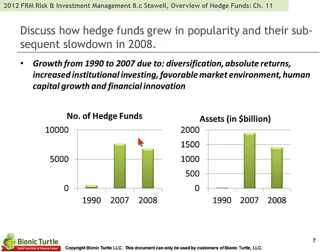Stahl makes the point that the growth of the hedge fund category as a whole from 1990 to 2007 was really dramatic, due to several factors — that they offered theoretical diversification benefits, and that the idea of absolute returns is attractive.